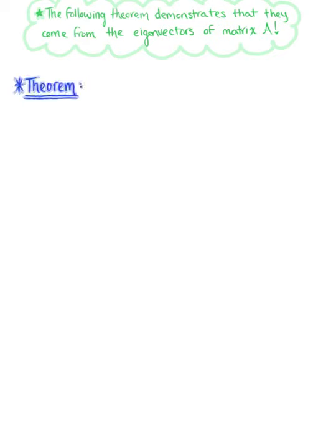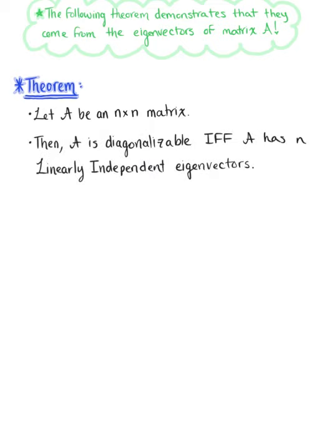So here's our theorem. We want to let A be an n by n matrix. Then matrix A is diagonalizable if and only if matrix A has n linearly independent eigenvectors.